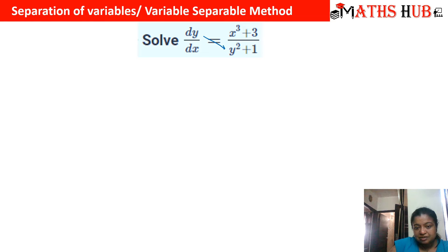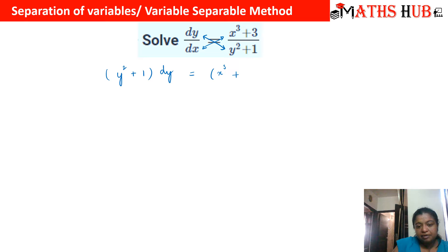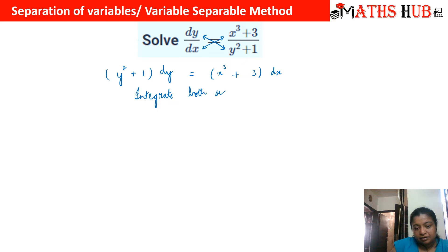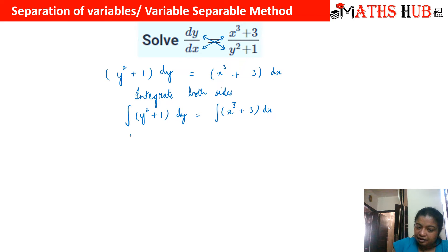On cross multiplying, the variables will get separated. When you cross multiply, we get the equation (y² + 1) dy = (x³ + 3) dx. Now clearly the variables have been separated. To find y, since we are solving for dy/dx, we need to calculate y in terms of x. You can integrate both sides. On integrating both sides, we get the integral of (y² + 1) dy equal to the integral of (x³ + 3) dx.